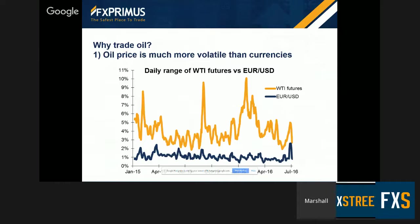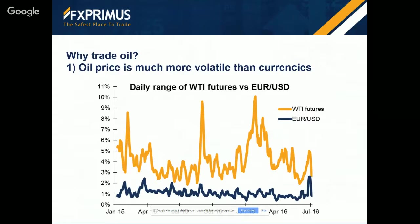First off, oil is extremely volatile. The price dropped 75% between June 2014 and February of 2016, only to rebound nearly 70% in the two months after that. On average, the price moves 4.7% every day between the low and the high of the day. That's tremendous volatility. It compares with a 1.1% trading range for dollar-yen and less than 1% for euro-dollar. As you can see on this slide, a much wider range.